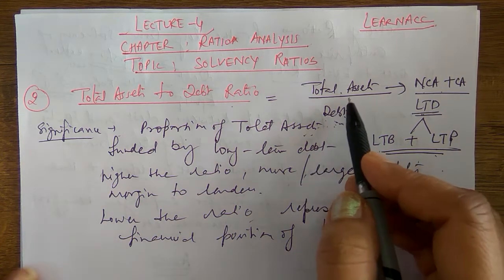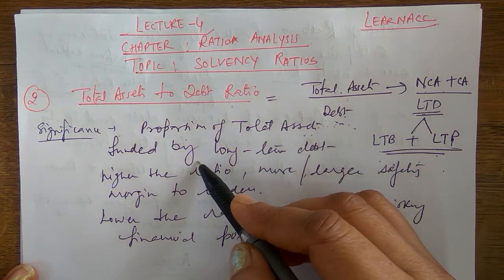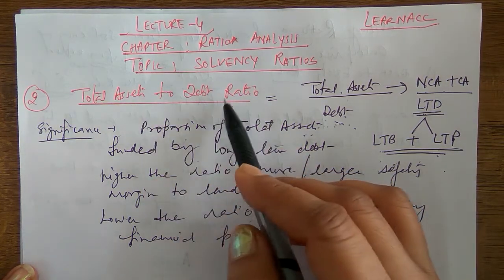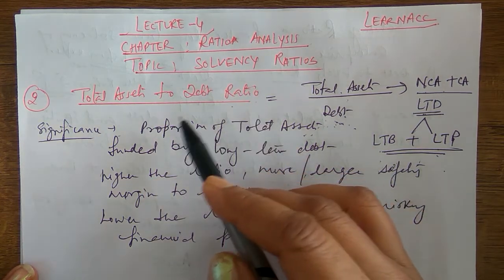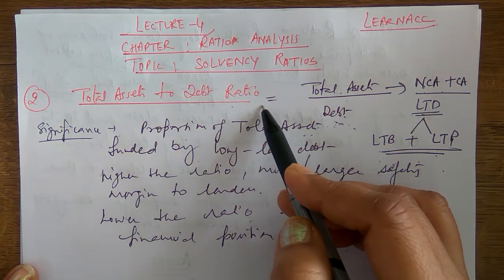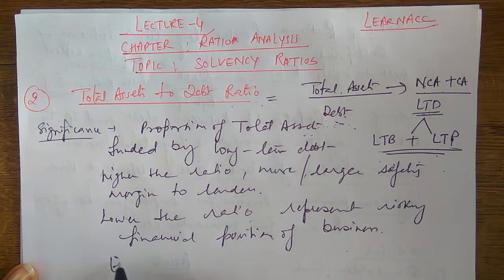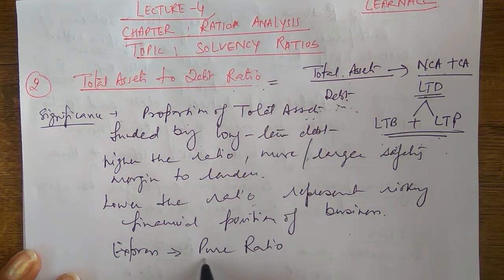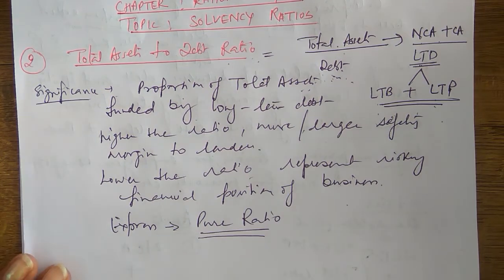The relationship between total assets and debt is described by the total asset to debt ratio. We can express it in pure ratio form — for example, two times, three times, four times. These are pure ratios.